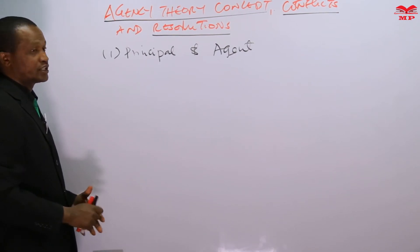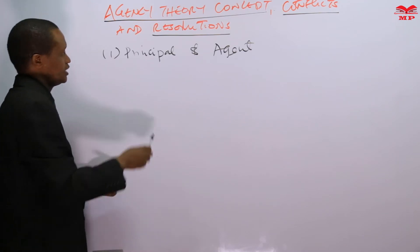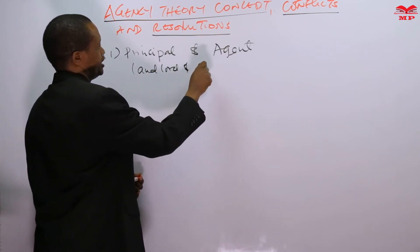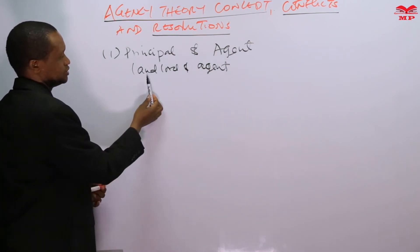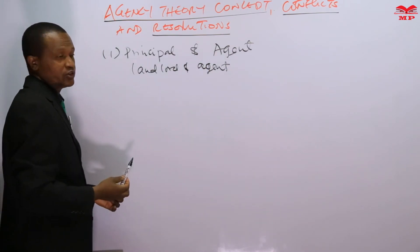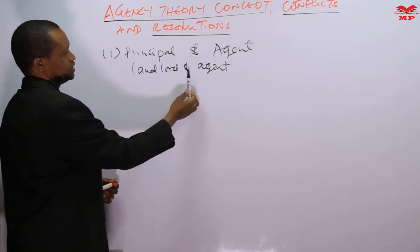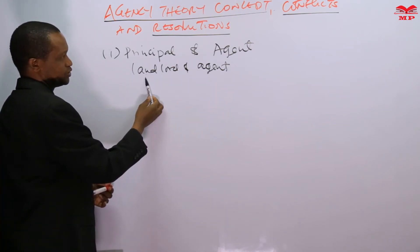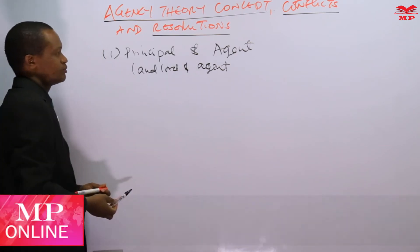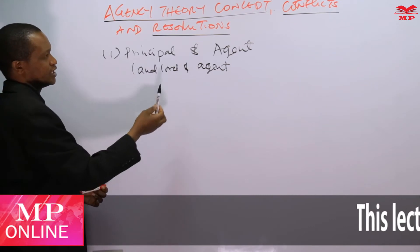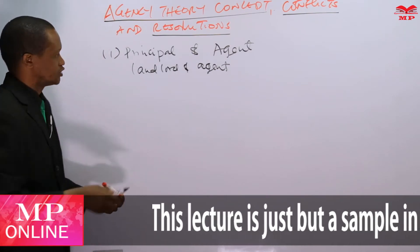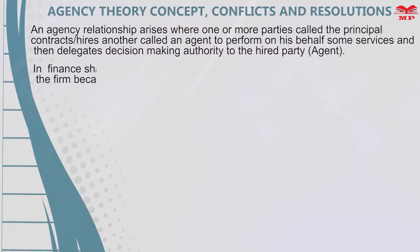A common example of an agency relationship is that of a landlord and an agent. The landlord enters into a contract with an agent so that this agent performs certain tasks on behalf of the landlord. It is a contract between two or more parties where one party, the principal, hires the agent to perform certain tasks on his or her behalf.